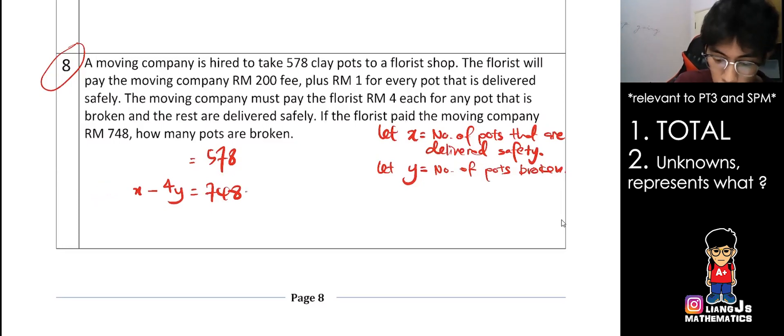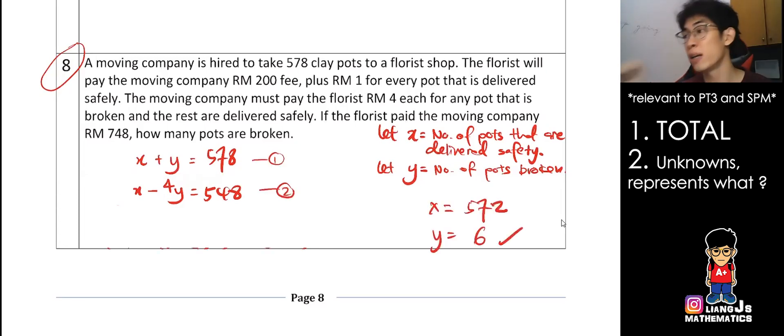You bring the 200 over then you minus it already. Minus 200, then you get a new number here, 548. Then why not you quickly type for me, quickly, the 578, what you're gonna write? Delivered safely pots plus broken pots, 578. That's the total pots. Okay, that's the answer. Okay, bye-bye.